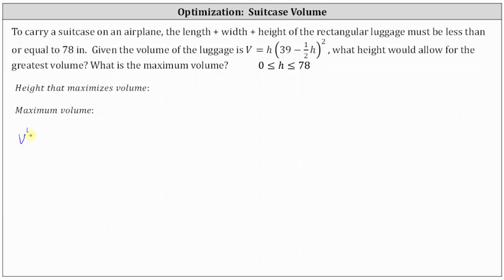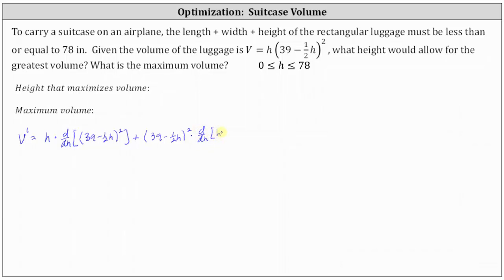Therefore, v prime is equal to the first function h times the derivative of the second function — the derivative of the square of (39 minus one half h) with respect to h — plus the second function, the square of (39 minus one half h), times the derivative of the first function, which is the derivative of h with respect to h.